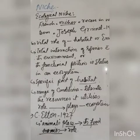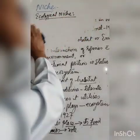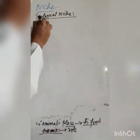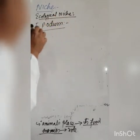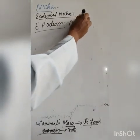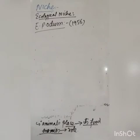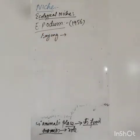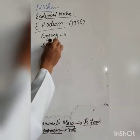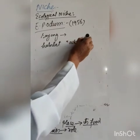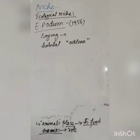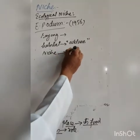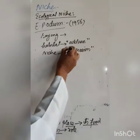Whatever an organism does in its habitat or ecosystem is said to be its ecological niche. E.P. Odum in 1956 differentiated habitat and ecological niche by saying that habitat is the address of an organism, and niche is the profession of an organism.